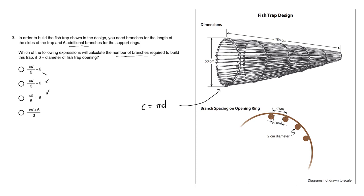We keep adding five, five, five. If we knew the entire circumference, whatever that number is, we simply divide by five to figure out the number of branches. So πD divided by five is the actual number of branches. We can see that the number of branches plus six more for the support rings is the correct answer, C.